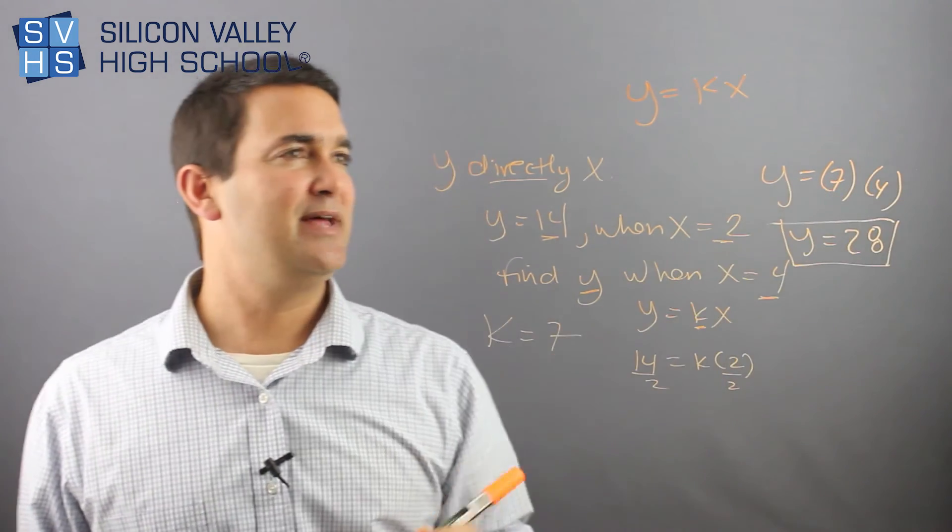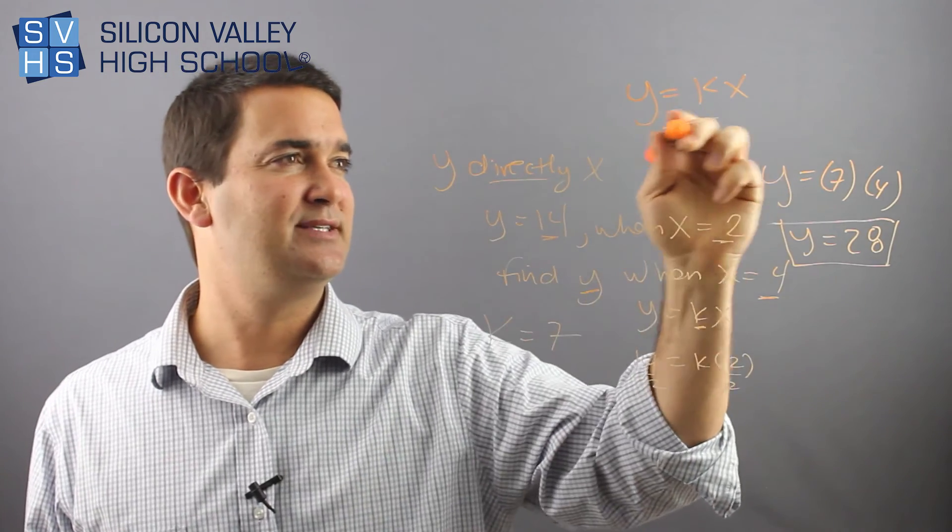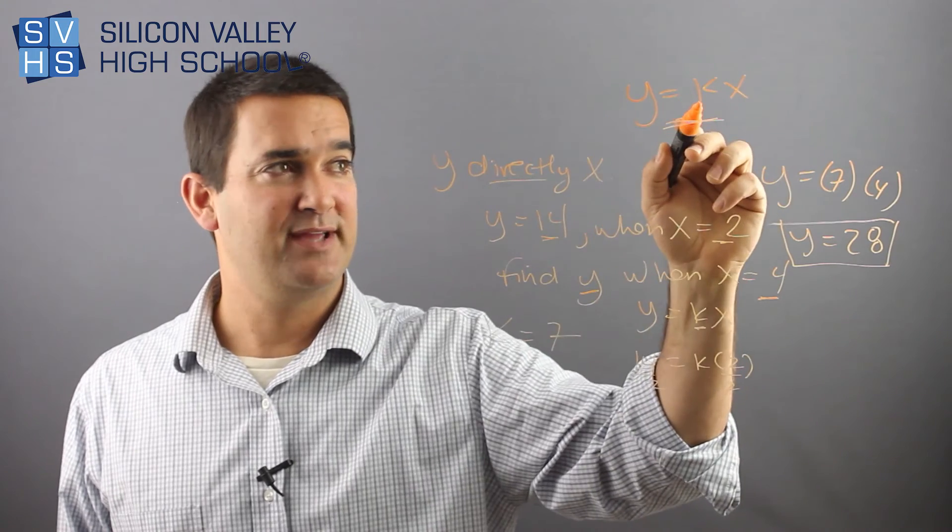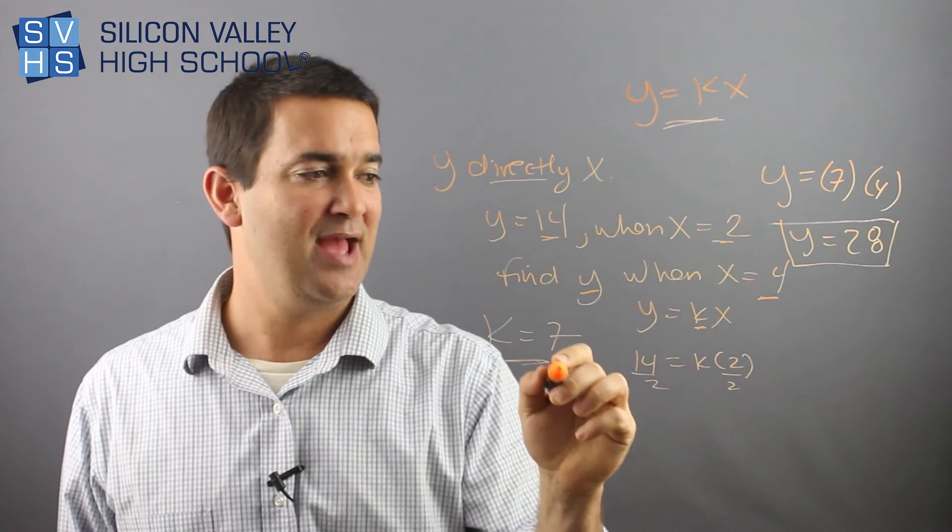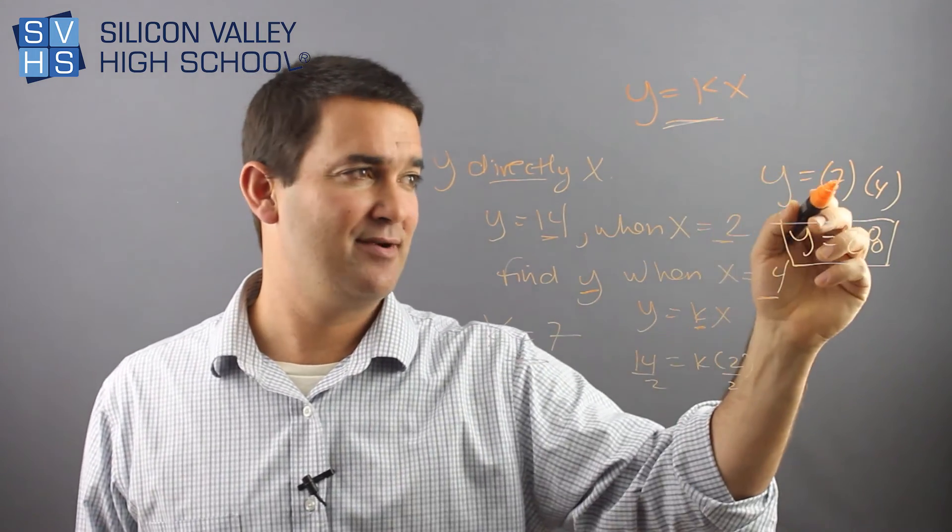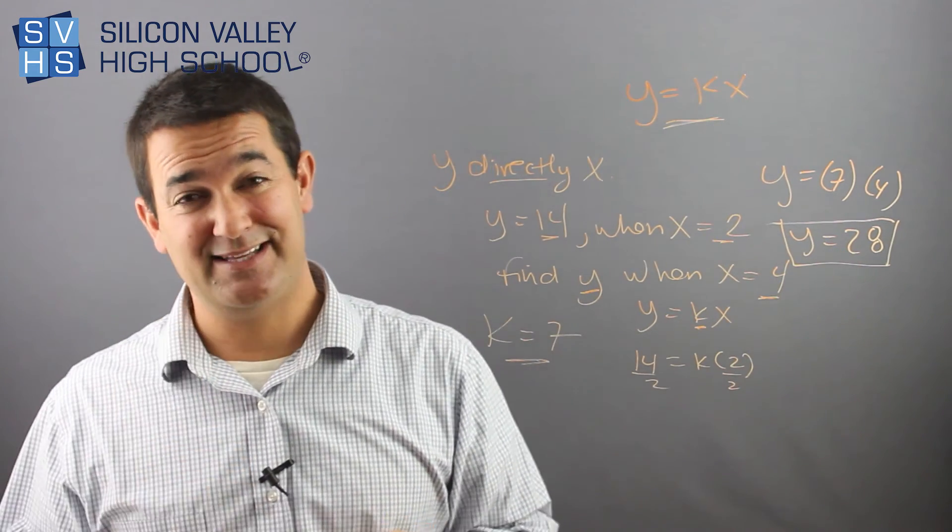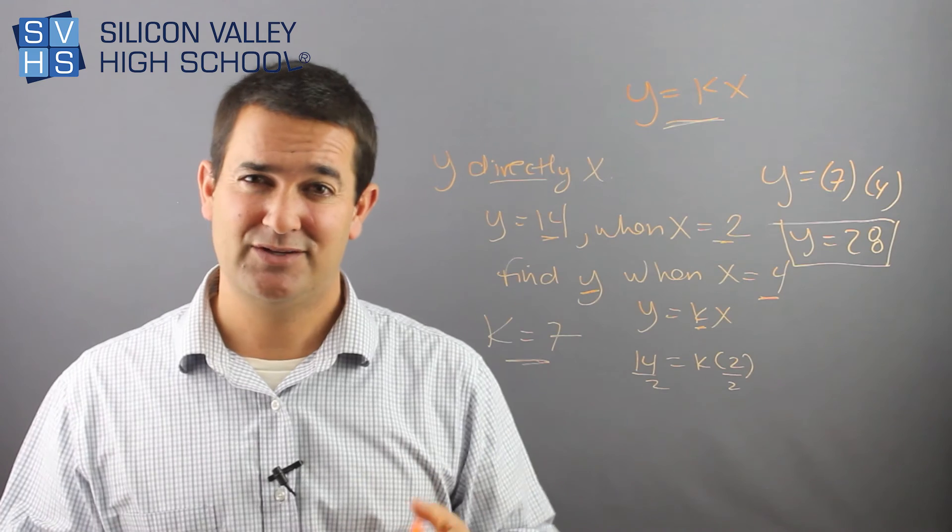So it's easy. The minute they say direct variation, this is your guy. The first two x and y numbers are used to solve for k, which we found. And then k was utilized in the next scenario to solve for whichever variable they want. That's direct variation. They're easy. They're very common on SAT and stuff like that. So it's pretty good to know.